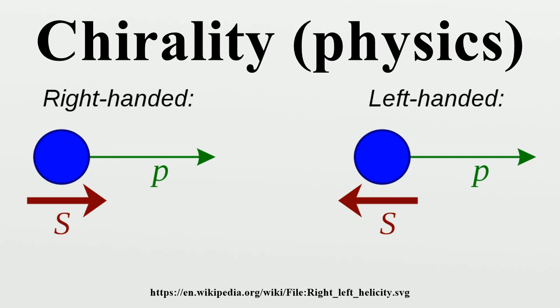The chirality of a particle is more abstract. It is determined by whether the particle transforms in a right- or left-handed representation of the Poincaré group. For massless particles, such as the photon, the gluon, and the graviton, chirality is the same as helicity.